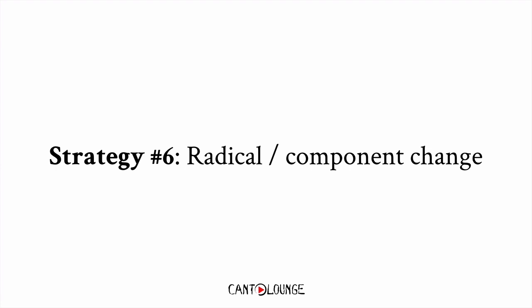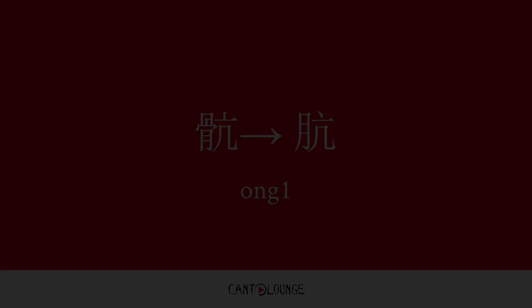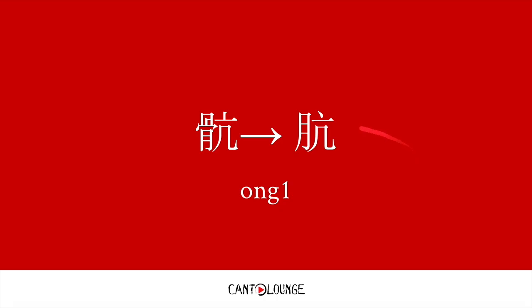Strategy number 6 would be a radical or component change. For example, they changed this radical — 骨 meaning bone — to radical 月 meaning moon. This word is 肮, which means dirty.